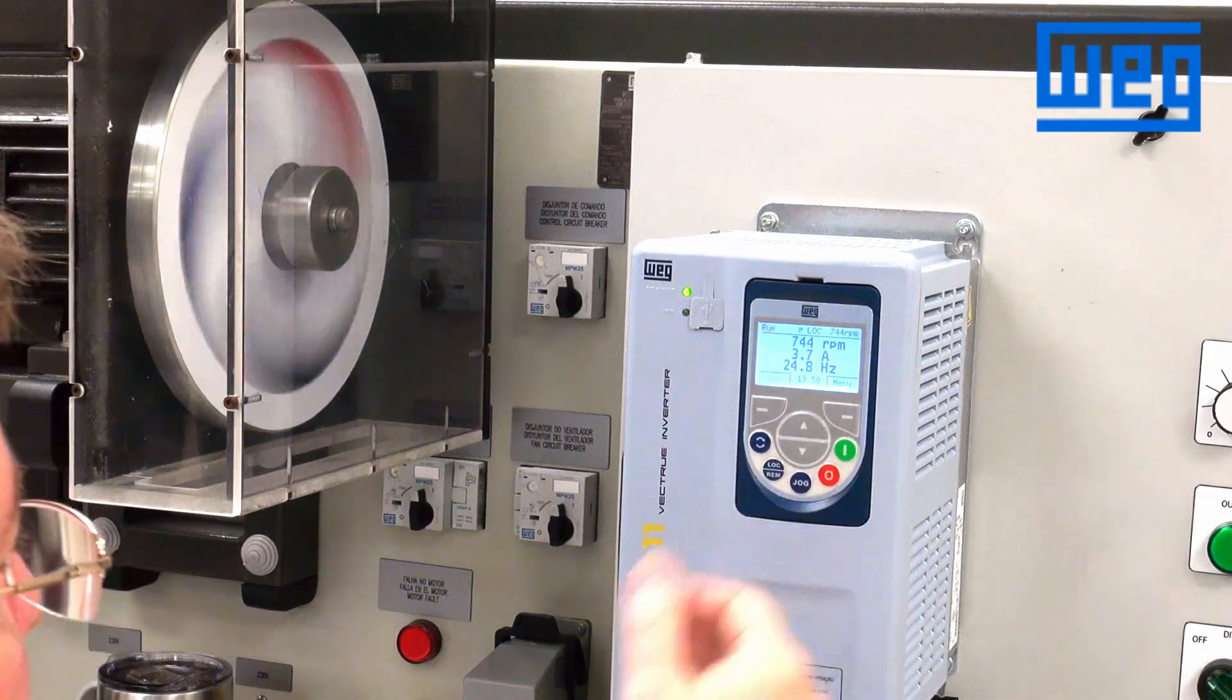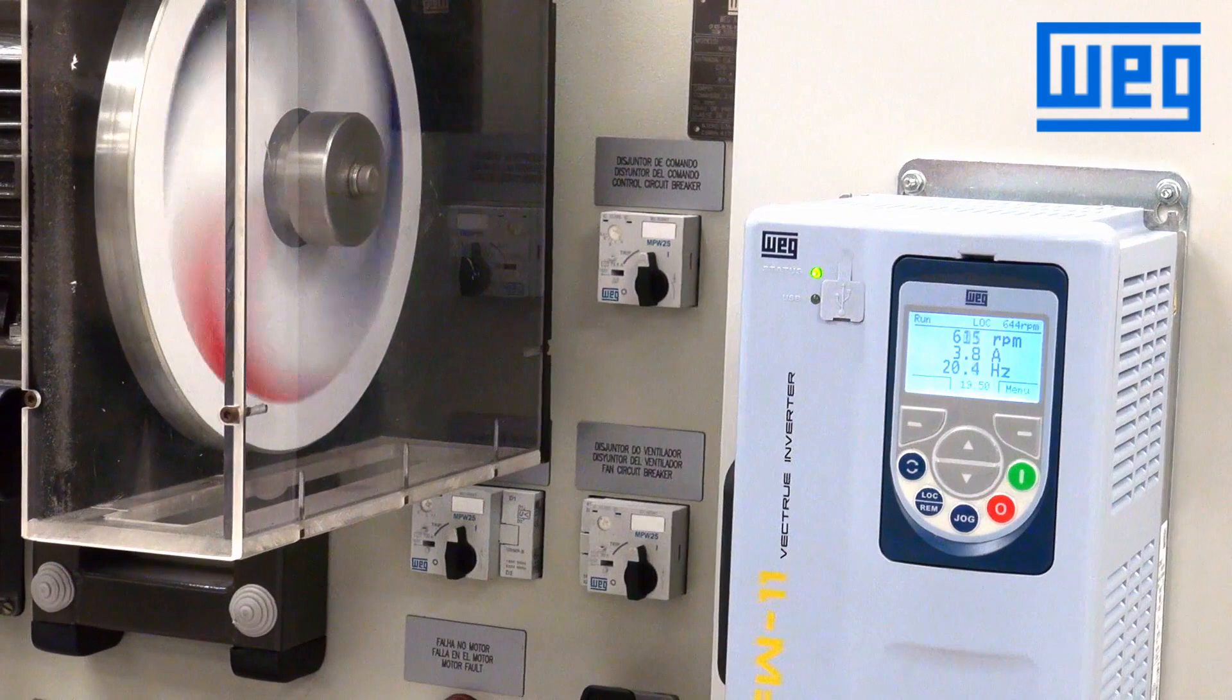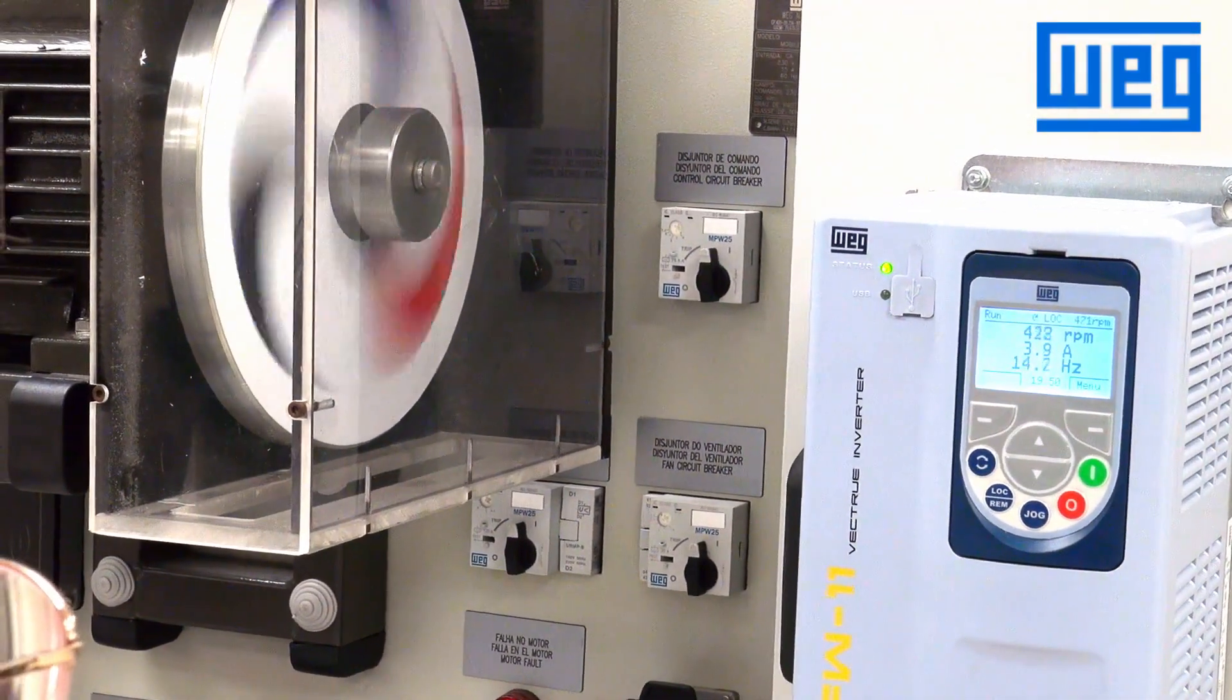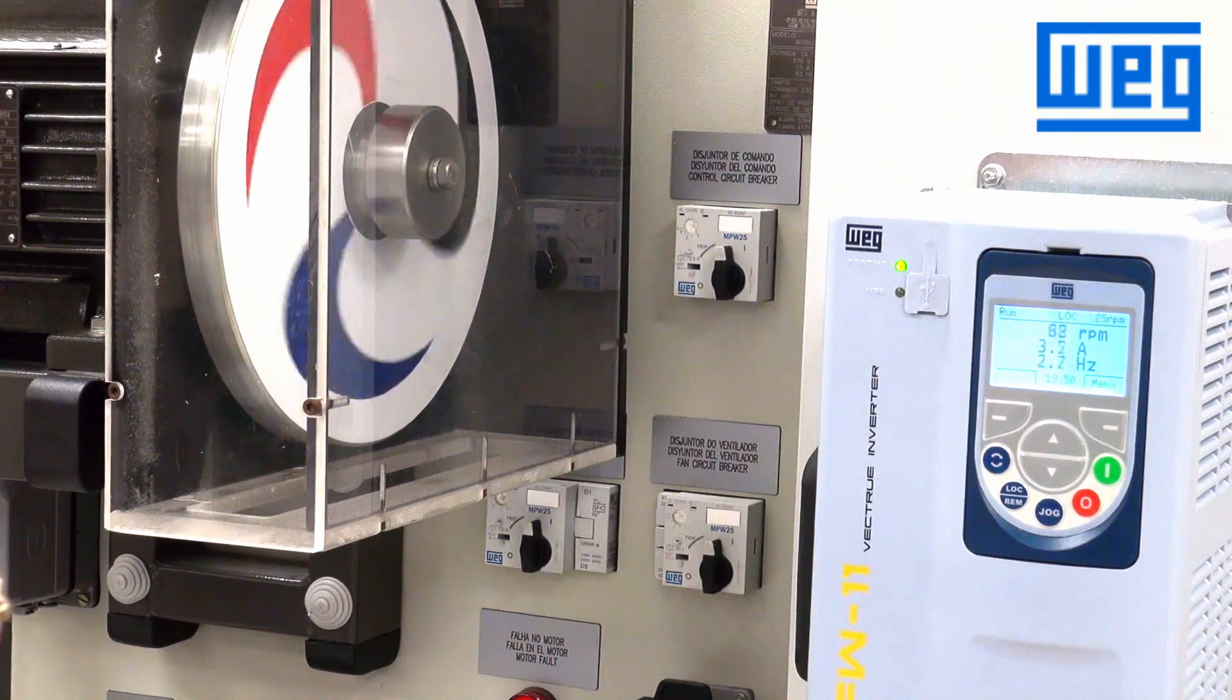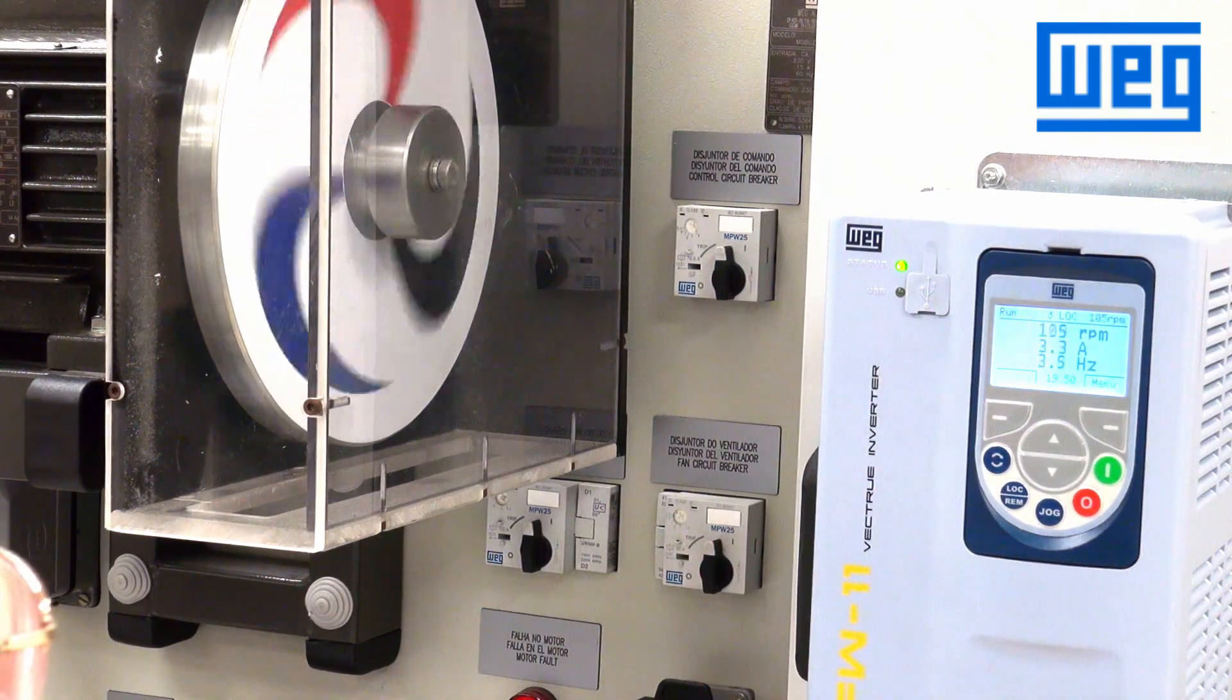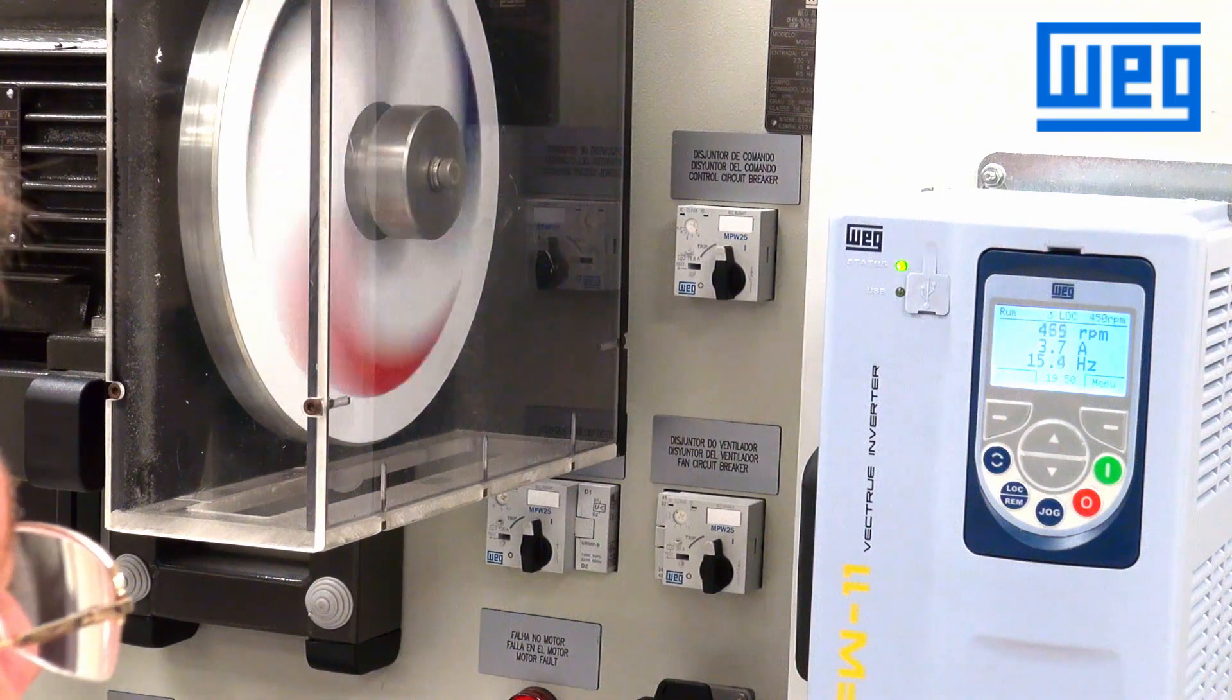We also see by using the reverse key, the motor will slow down, go to zero, and then will return in the reverse direction at the same set speed that you previously set.